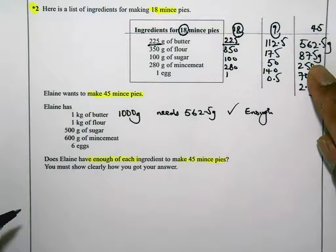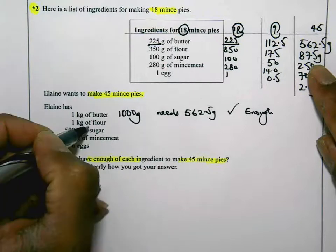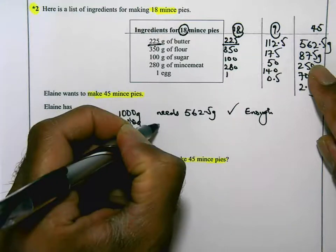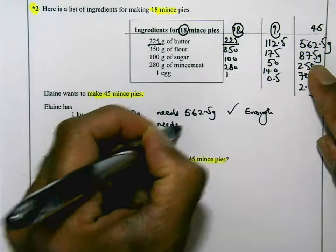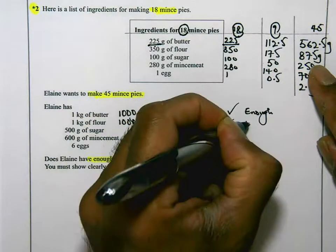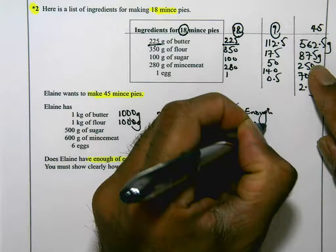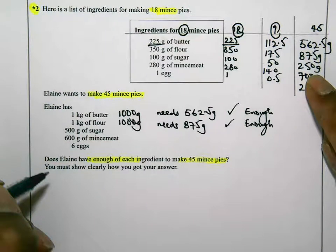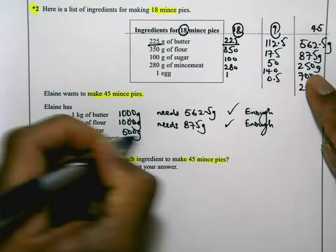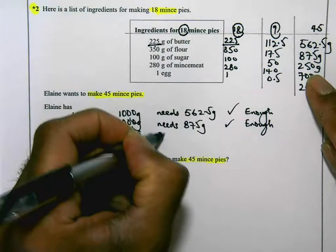1 kilogram of flour, that's 1,000 grams of flour, and she needs 875 grams of flour. Yes, she has enough. 250 grams of sugar, she has 500 grams of sugar, and she needs 250 grams of sugar. Yes, she has enough.